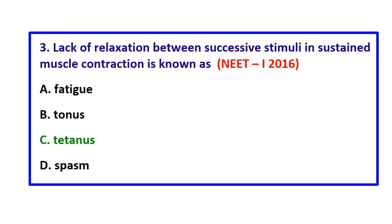Question 3: Lack of relaxation between successive stimuli in sustained muscle contraction is known as — the correct answer is tetanus.